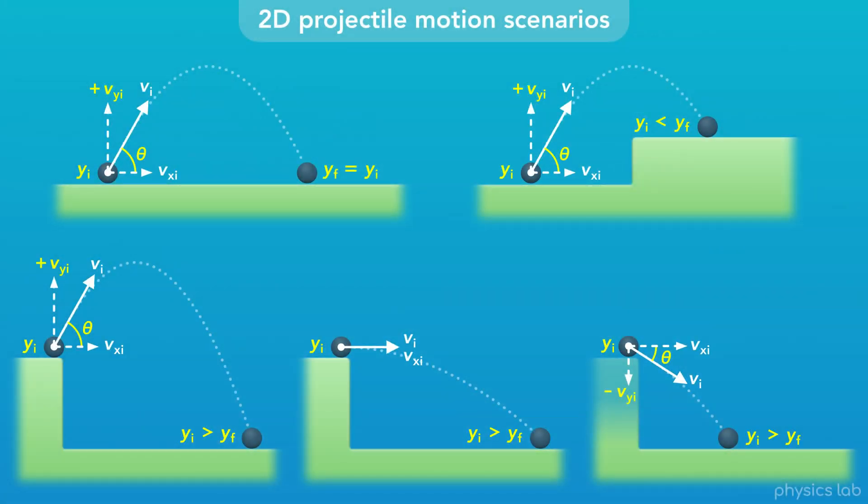To wrap up 2D projectile motion, here's what the motion graphs would look like for each scenario.